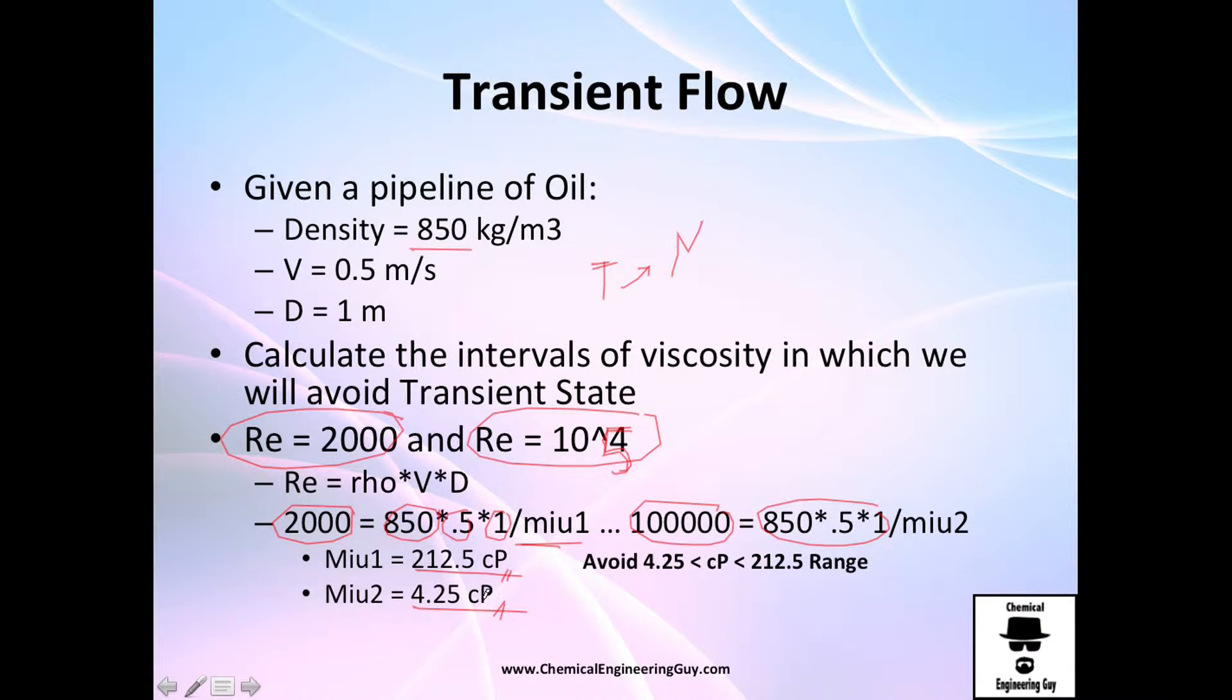I will tell you that either you operate with less than 4.25 centipoise or you operate more than 212.5 centipoise. Because if you are in between, let's say you have 100 centipoise, you will be working in transient flow which is a very risky and very difficult to model region, so avoid that.